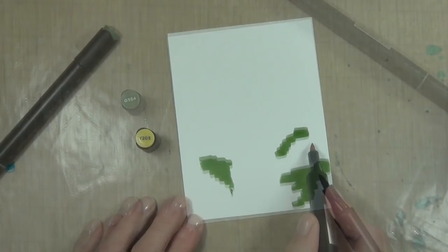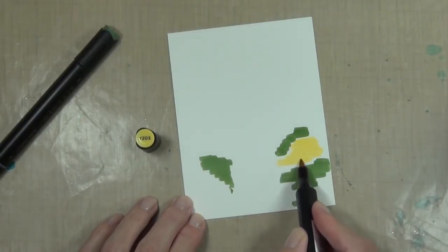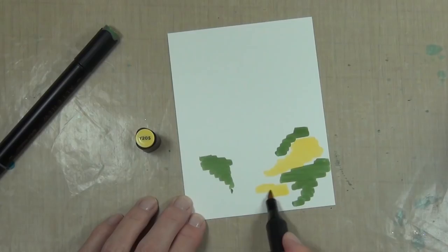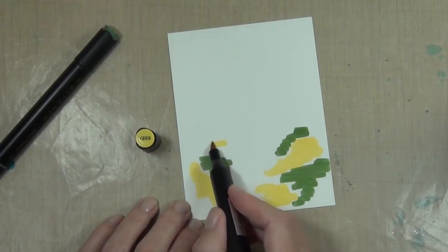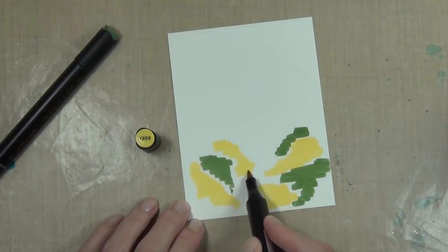Now the artist markers from Altenew are alcohol-based, and I know that when we use alcohol inks on the Yupo paper they blend really beautifully, so I thought I'd see how they go.